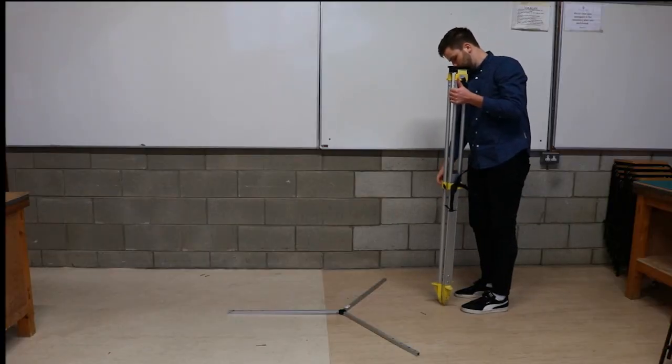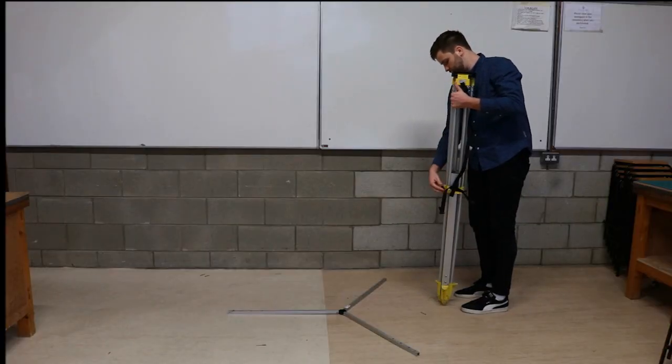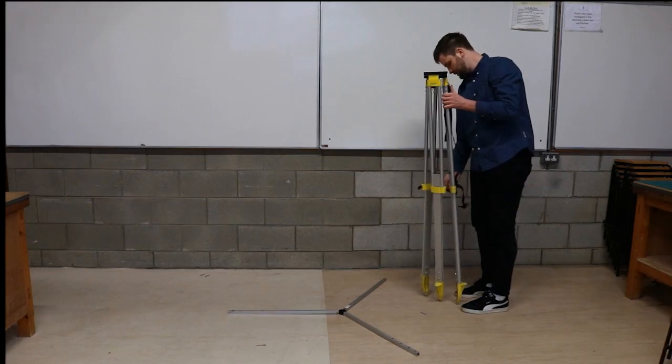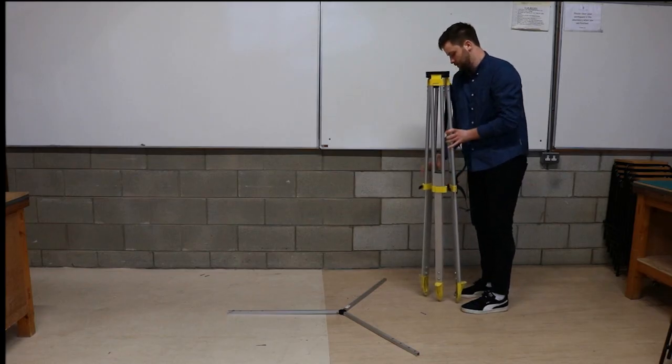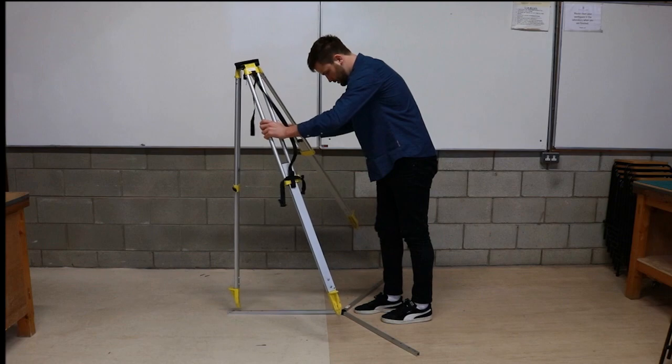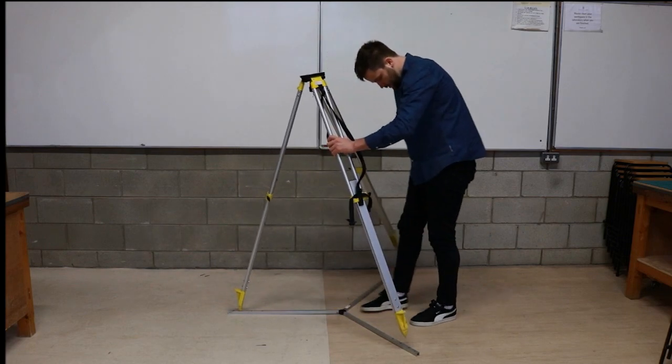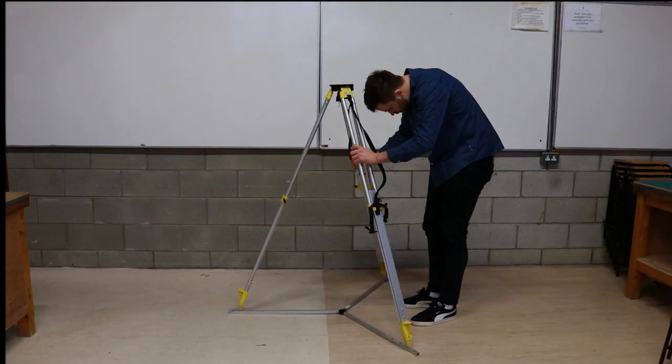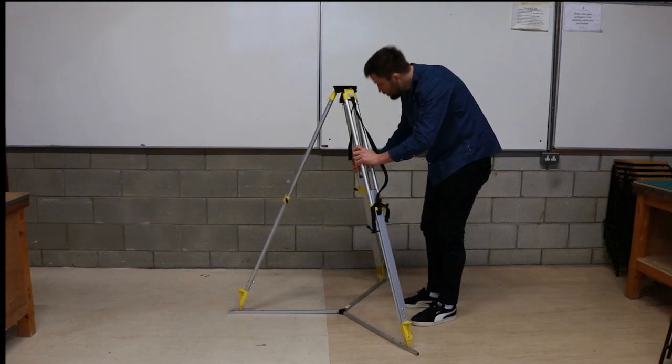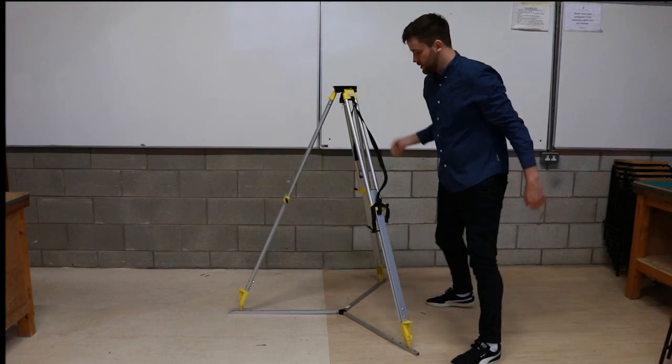Extend the legs until the plate is roughly shoulder height. This will prevent you from bending or overextending once the total station is attached. Place the legs into the allocated holes on the tripod star. You may have to adjust the legs of the tripod until they are approximately level as shown.